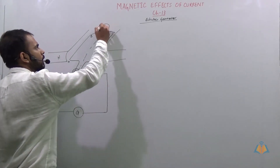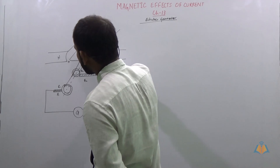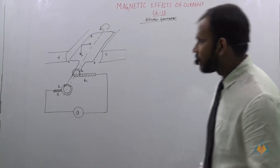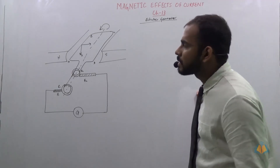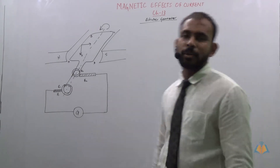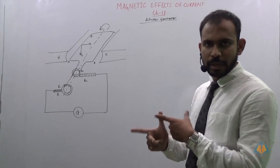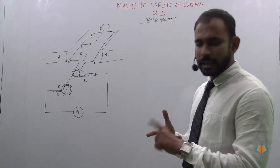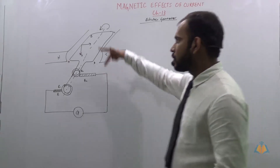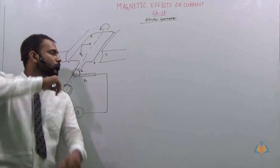Let us rotate the shaft in the anti-clockwise direction. A force is applied to AB in the downward direction. Now, for electromagnetic induction we use Fleming's right hand rule — unlike the electric motor which uses Fleming's left hand rule. Fleming's right hand rule: the thumb shows the direction of force, the index finger shows the magnetic field, and the middle finger shows the direction of current.